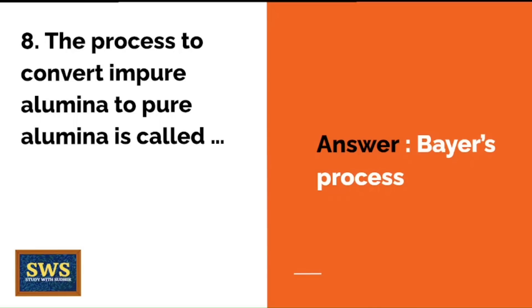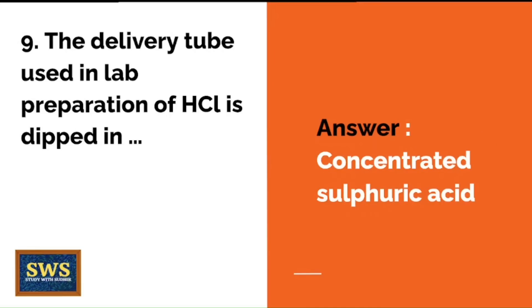The process to convert impure alumina to pure alumina is called Bayer's process — there is a well-known agricultural company by the same name. The delivery tube used in the lab preparation of HCl is dipped in concentrated sulfuric acid.